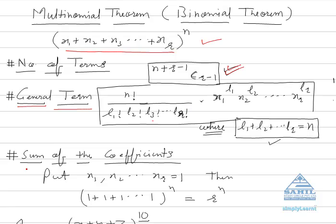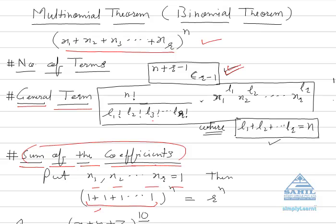The third kind of question asked in the multinomial theorem is the sum of the coefficients. If you expand the whole multinomial, what is the sum of all the coefficients? Simply put x1, x2, x3 all equal to 1. Then the answer is 1 plus 1 plus 1, r times, whole raised to power n, which gives r raised to power n.